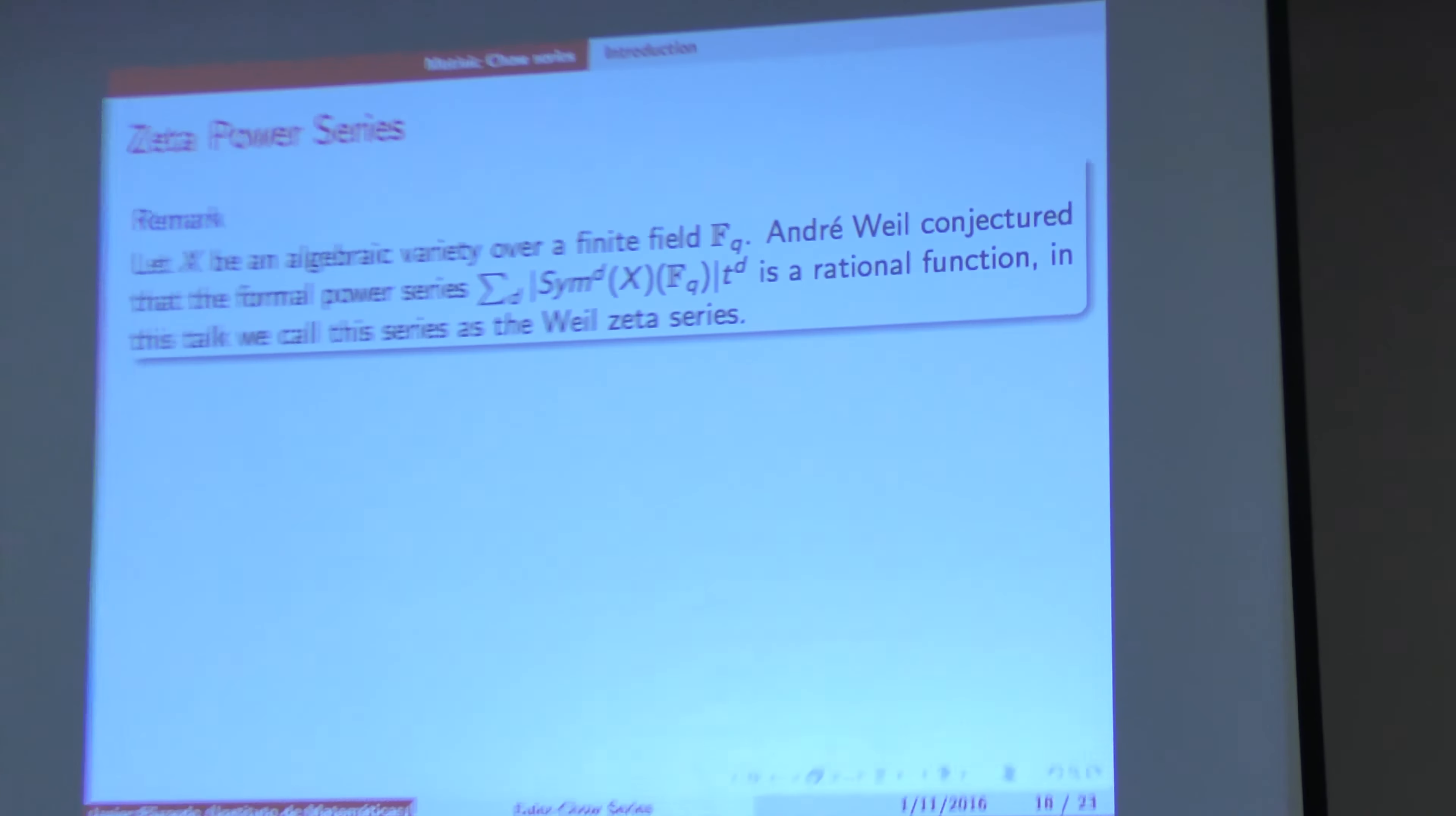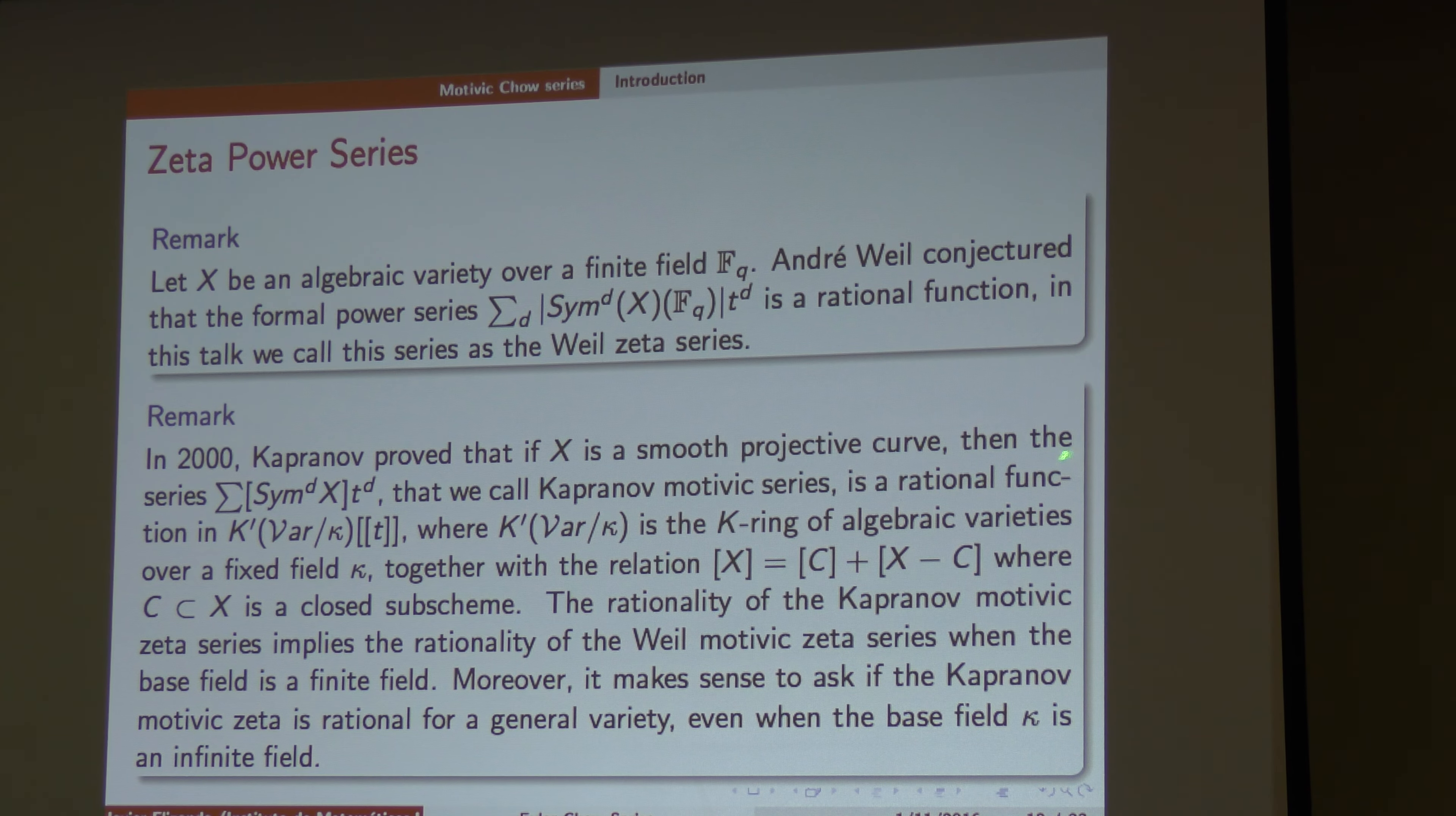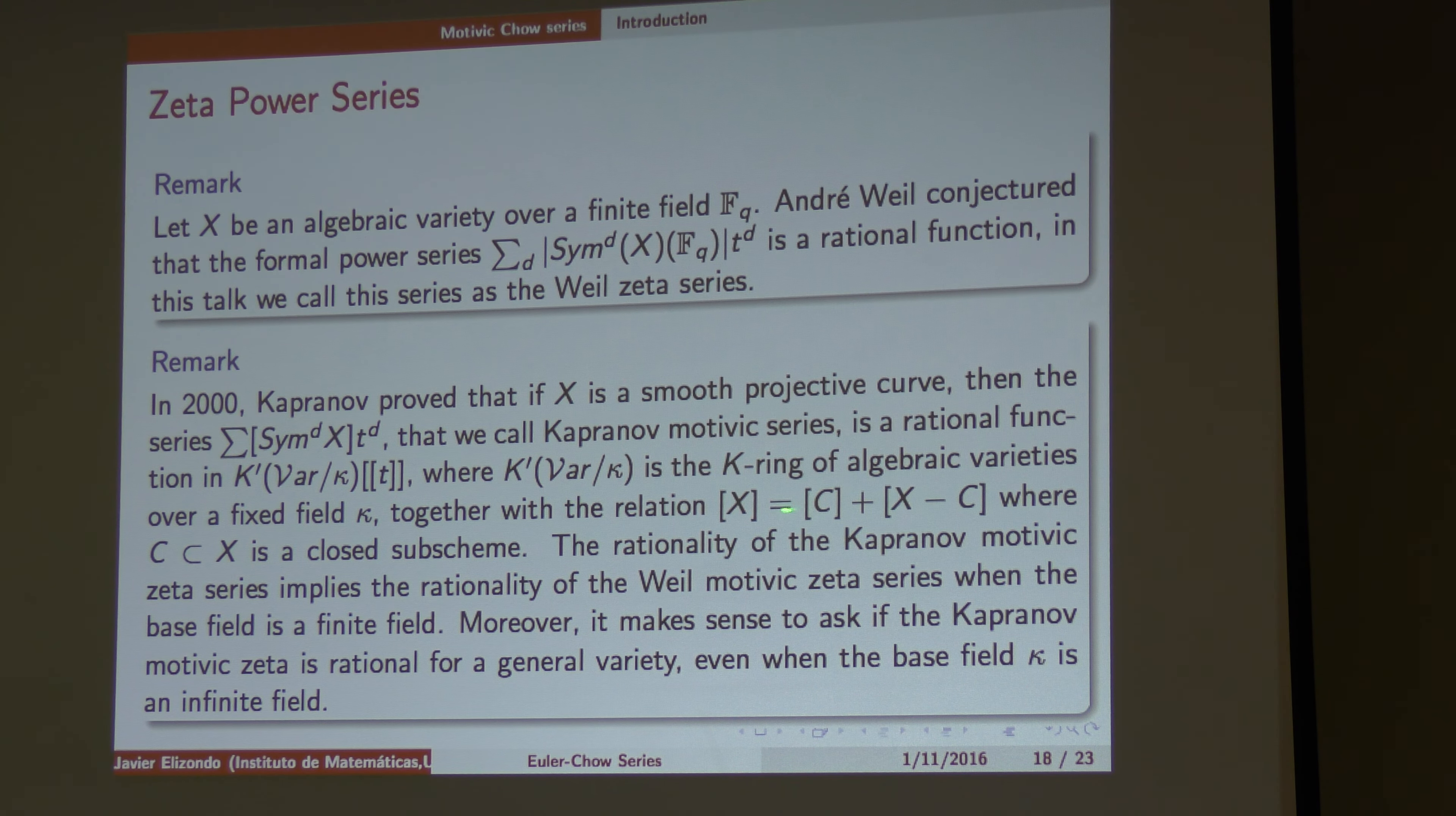So what is... When you have a finite field, you have the series. It's the Weil zeta series. In 2000, Kapranov proved that if X is as nuclear to call, then the series, called Kapranov multi-zeta series. This is a multi-series, right? The rational function here. When this is the kind of finite field. Together with this equation. And C is across to the C.